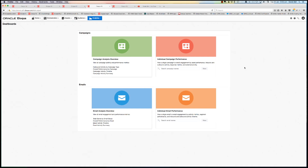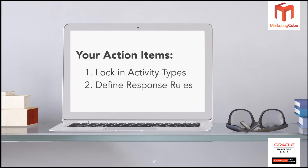Hopefully what you're seeing here is lots of information to help you quickly understand what's happening within the platform and within your campaigns - that's the key objective with these dashboards. So some action items for you out of today: number one is to lock in activity types - that's your product, region, and campaign type information - determining exactly what they are, adding those to the campaign, and making them required fields to really ensure the quality of reporting. Number two is to define your response rules.